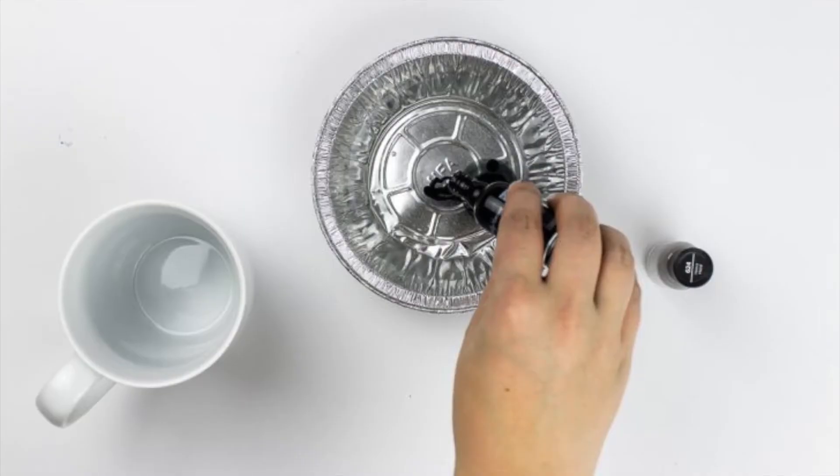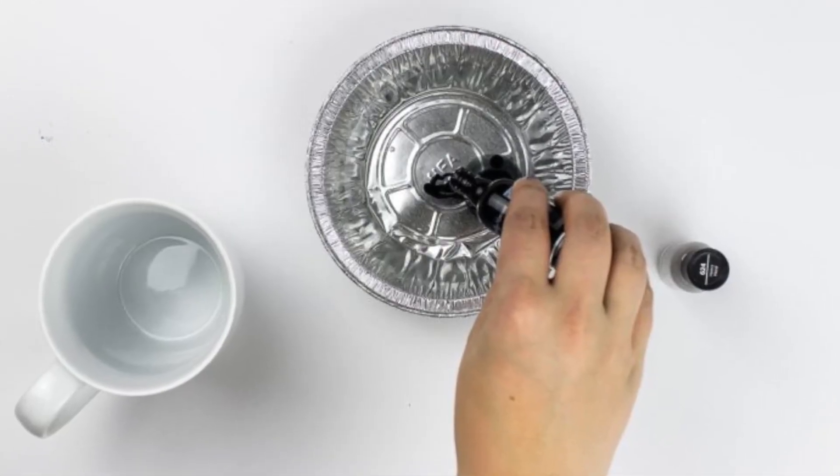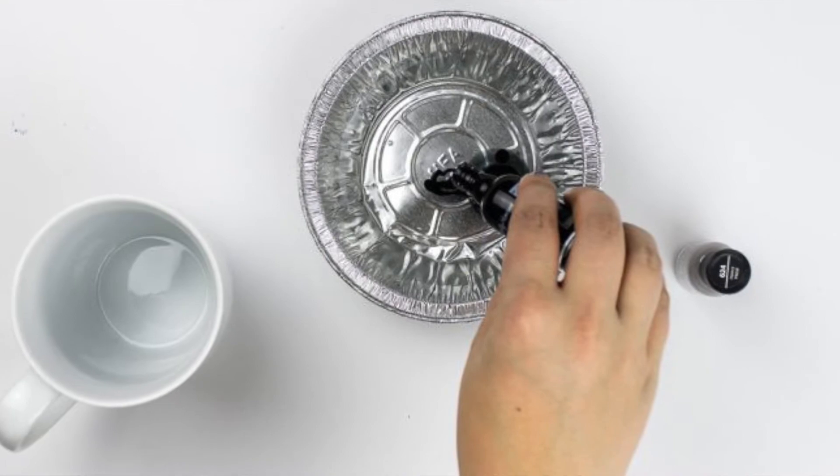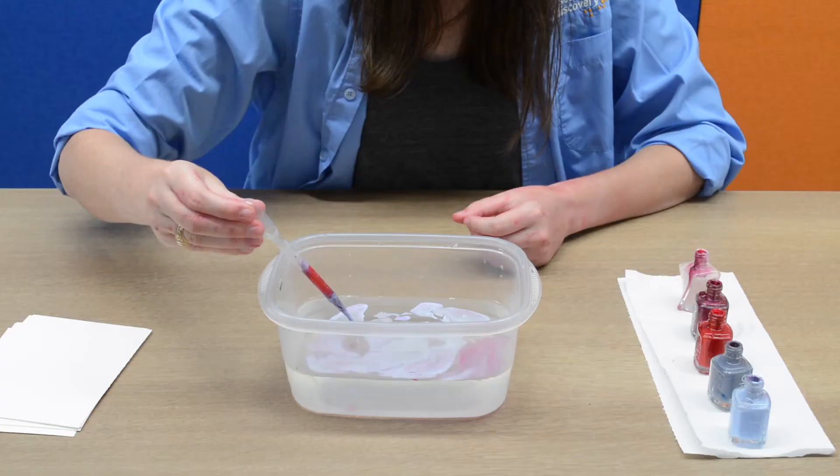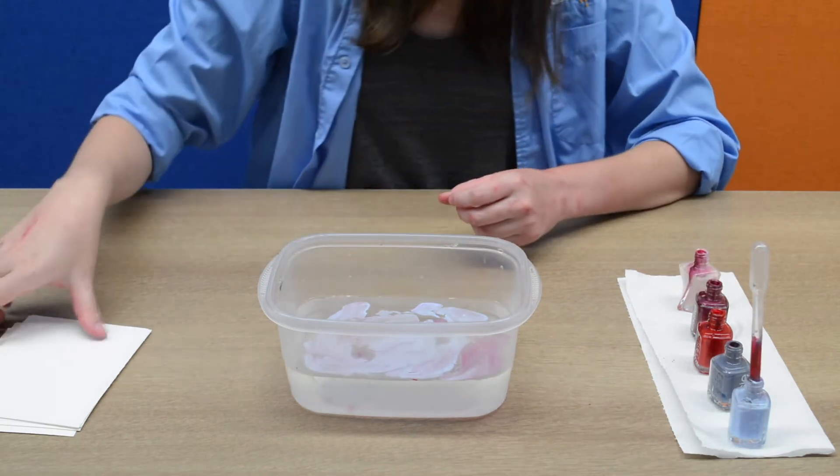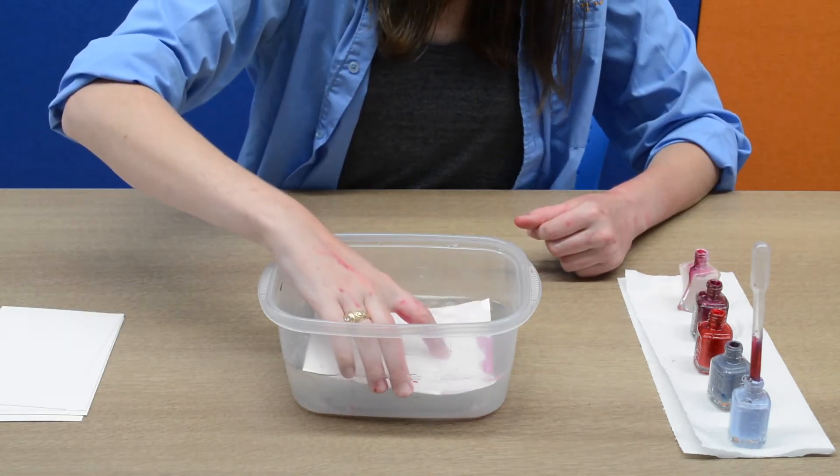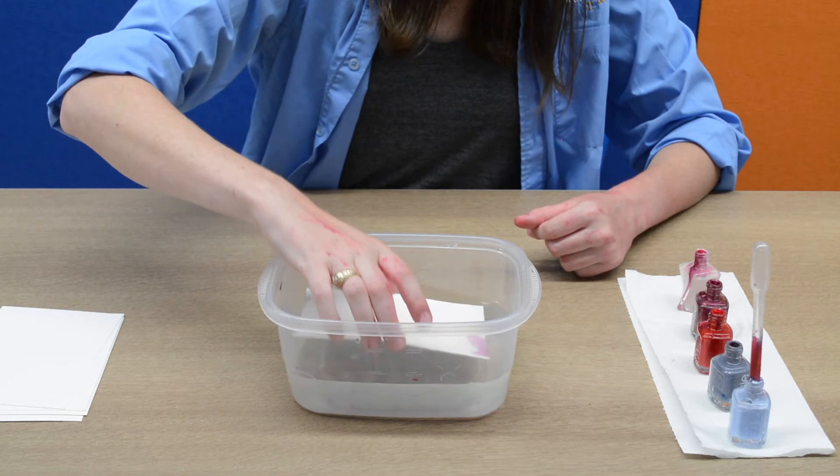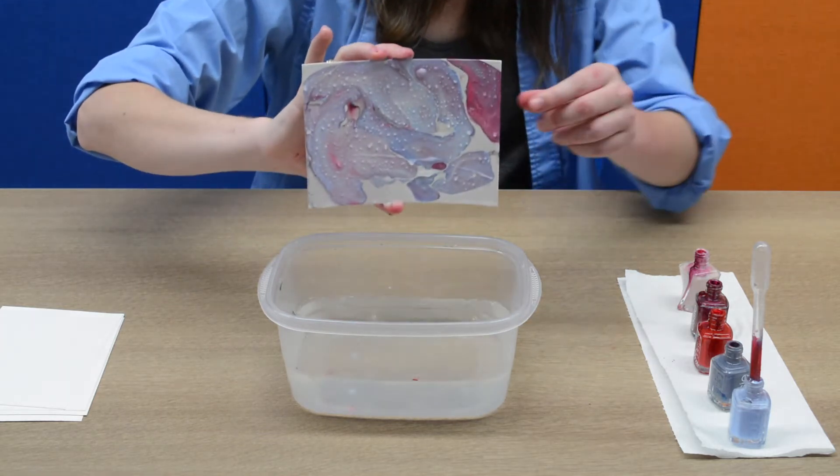If you don't have a pipette, feel free to just slowly pour the nail polish bottle into the water. You can even use a stirring stick or toothpick to move around the colors a bit. Once you are finished adding your polish, take your card stock or thick paper and drop it straight into the water of your container. When you lift it up, voila, a masterpiece.